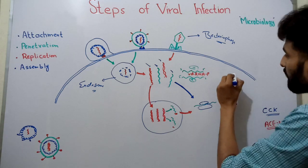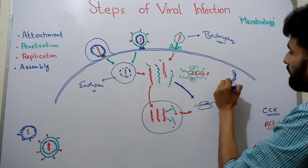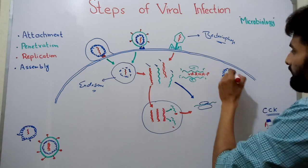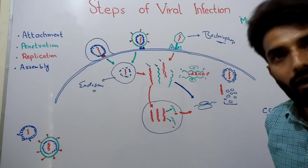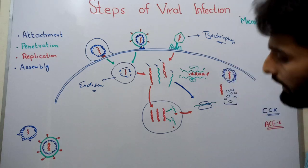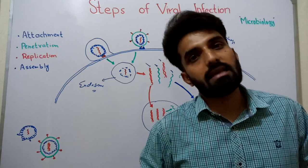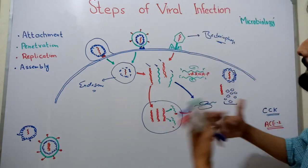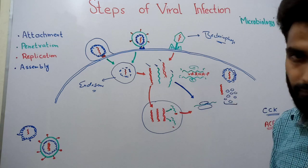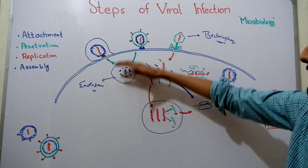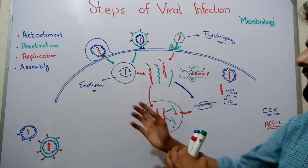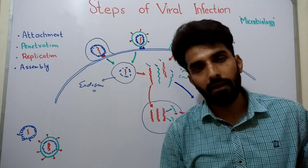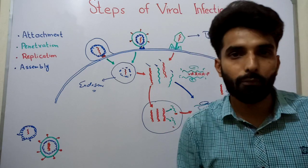Whether it is an RNA or DNA virus, once all the required proteins are formed, the process of assembly takes place. These proteins assemble into a complete viral particle. The new virions exit the cell and begin infecting nearby cells. These are the four steps: attachment, penetration, replication — depending on whether it is DNA or RNA — and then assembly, followed by release to infect neighboring cells.